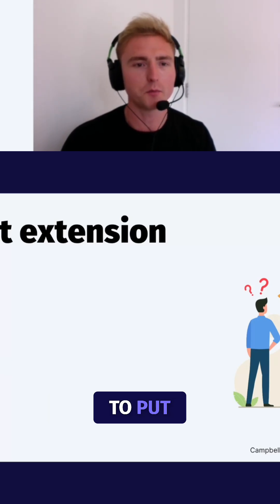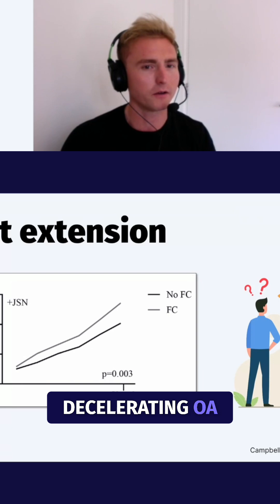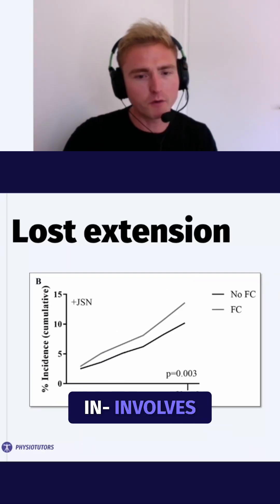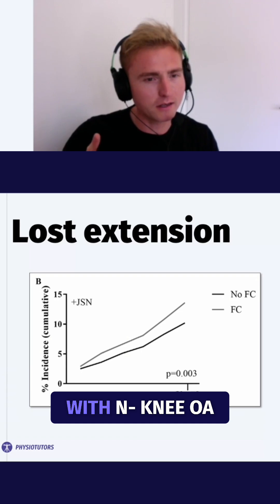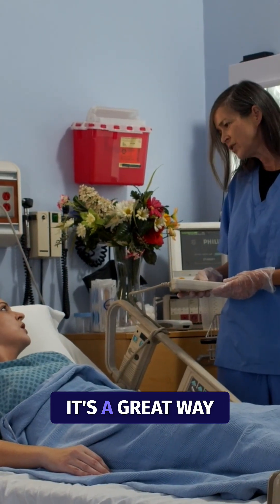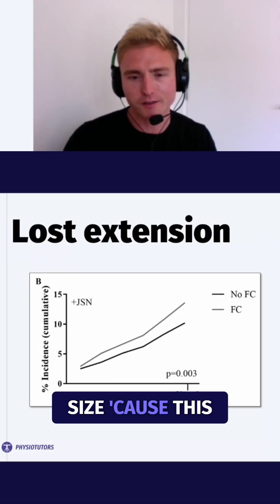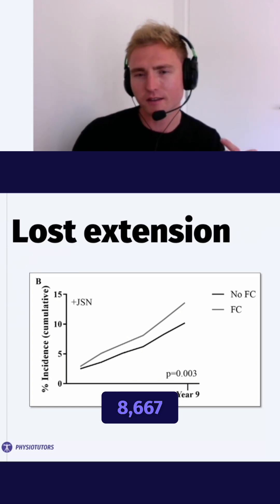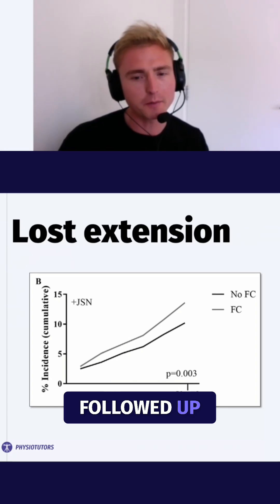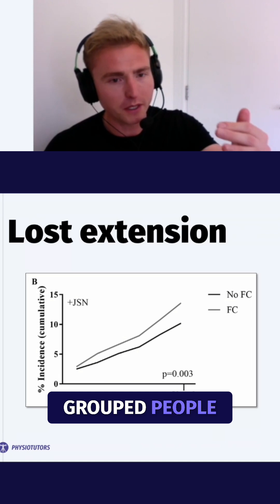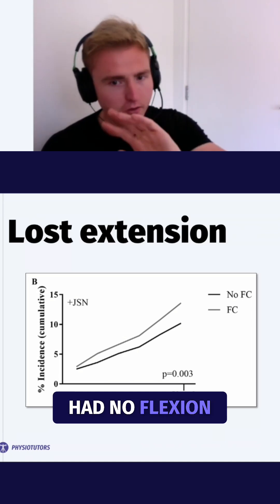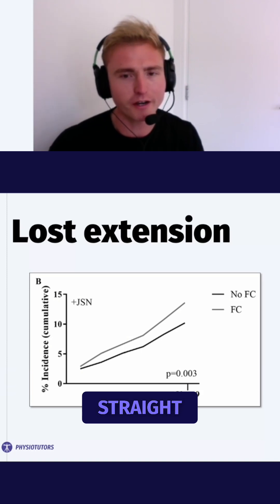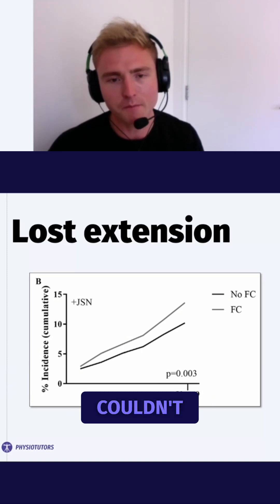This data is from the US Osteoarthritis Initiative. Knee research is a great way to double your sample size — this study involves 8,667 knees followed up over nine years. They grouped people into those who had no flexion contracture, meaning they could get their affected knee straight, and those who couldn't.